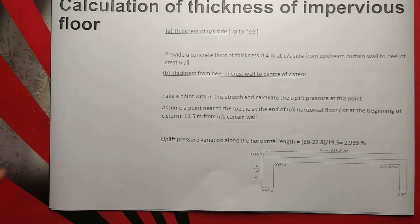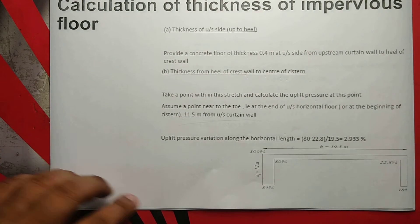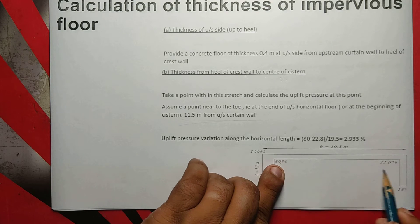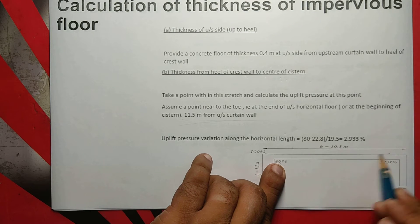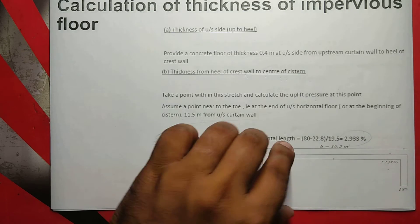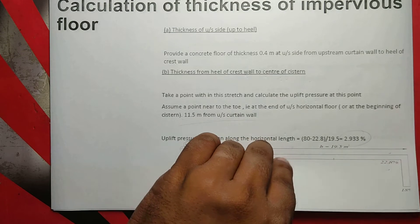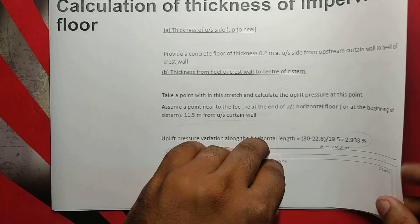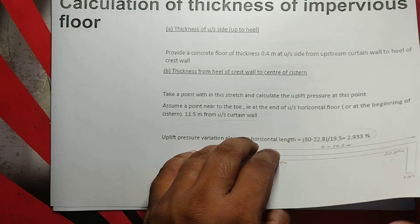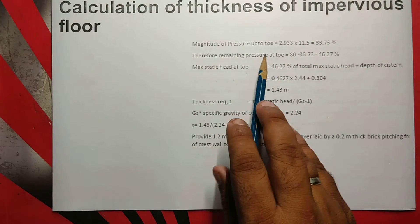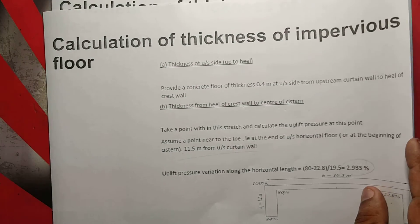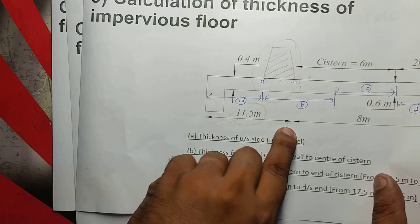The pressure variation is here. The m is 22.8. Then m minus 23.8 is 19.5. The length is 19.5. It's 11.5 meters.